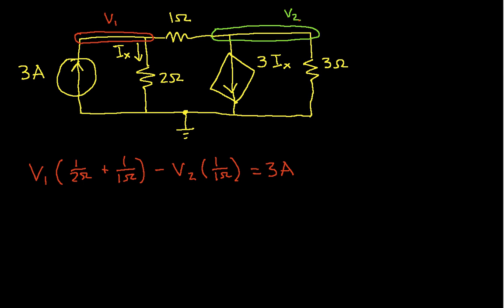Node 2, I will have minus V1 times 1 over 1 ohm, plus V2 times 1 over 1 ohm, plus 1 over 3 ohms. And now I have a current source. This current, this 3 times IX, is the current that's leaving the node due to a current source. So if it's leaving the node, it will be negative 3 IX.